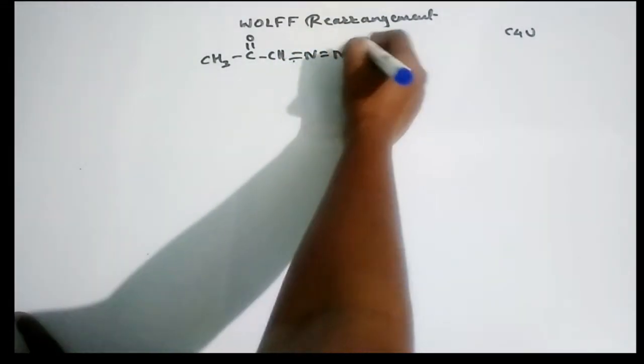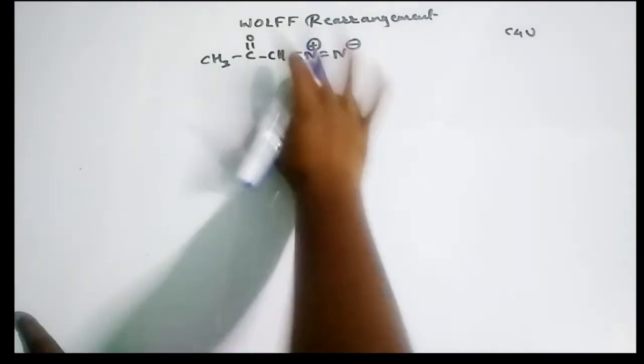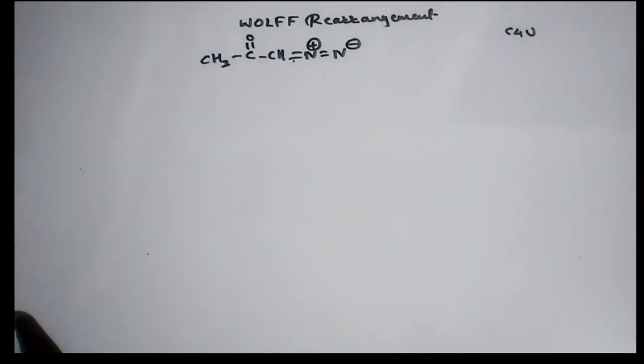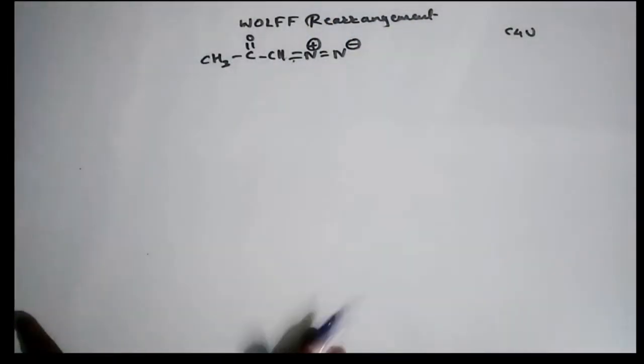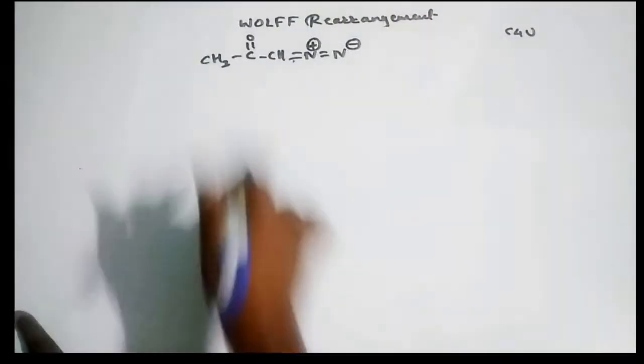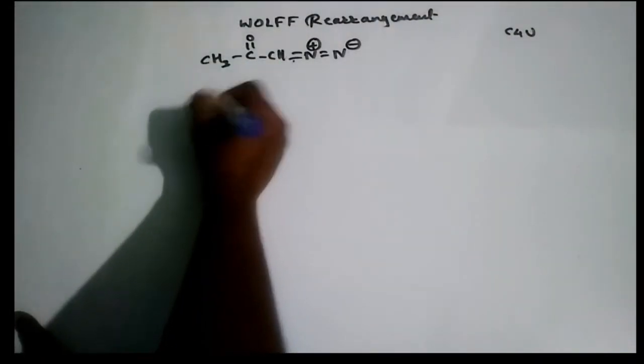To form ketones. So this is the alpha diazo compound, the basic structure. It is a stabilized one, you can see the resonance stabilization. Before going to the reaction, one must know how this is to be prepared.